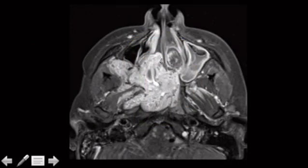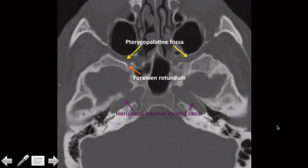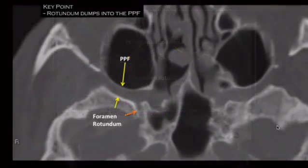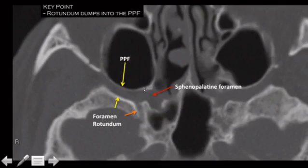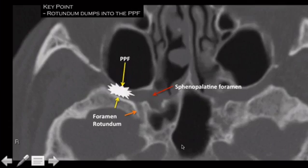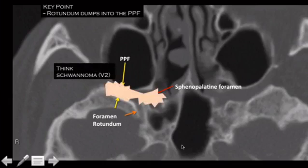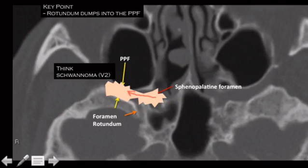Next case — this one is maybe in the sphenopalatine foramen, growing into the pterygoid palatine fossa (PPF). Quick anatomy review: this is the sphenopalatine foramen here, see how it connects with the PPF. The foramen rotundum also shows movement down there. If a tumor just sits here, you might think schwannoma of V2. But if it starts here and grows in this direction, that is your JNA — starting in the sphenopalatine foramen, growing into the PPF.